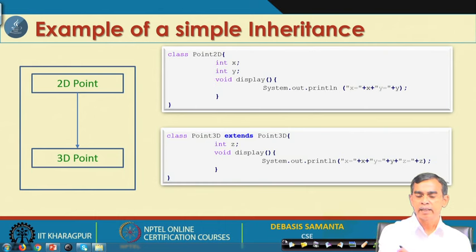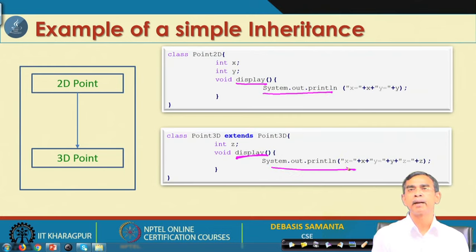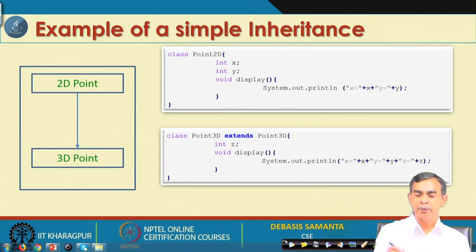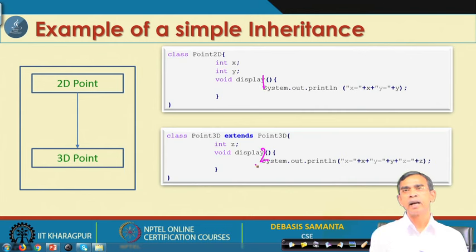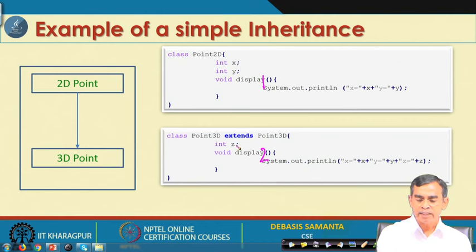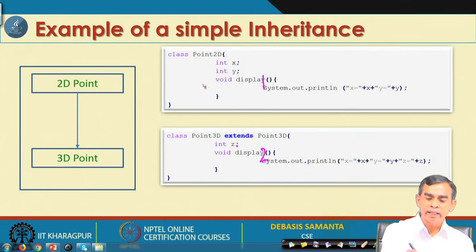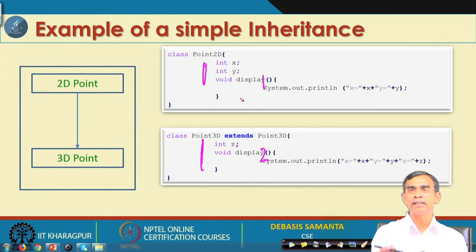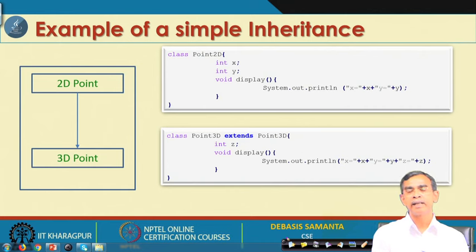If instead we name the methods display1 and display2, then both methods are there. Like x and y, display1 is also accessible in Point3D. Point2D is the general concept and Point3D is the special one — it has more things than Point2D itself. This is the concept of inheritance, and this is an example of single, simple inheritance.